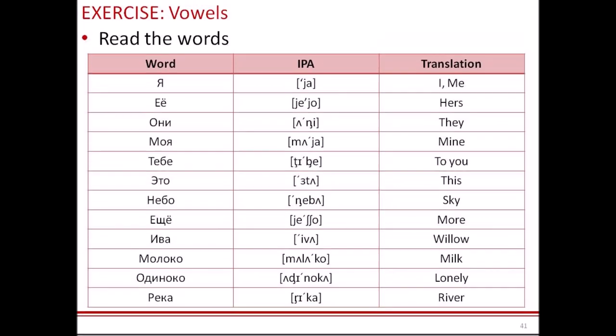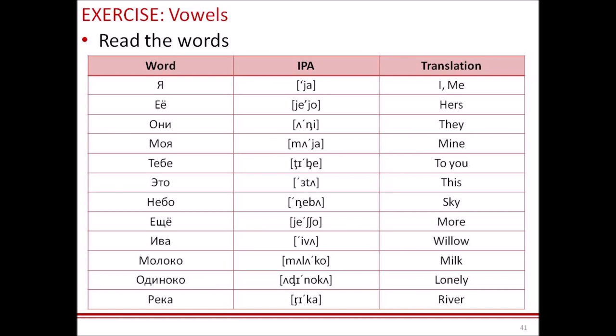Let's practice and read some words together: Я, Её, Они, Моя, Тебе, Это, Небо, Ещё, Ива, Молоко, Одиноко, Рика.